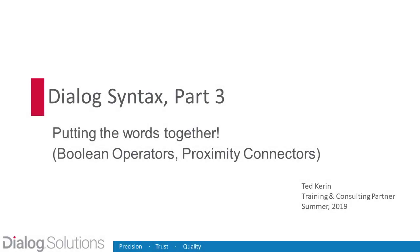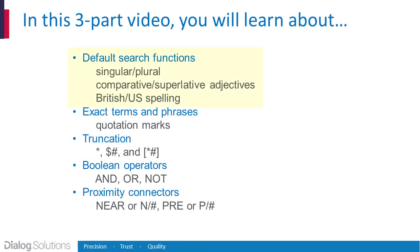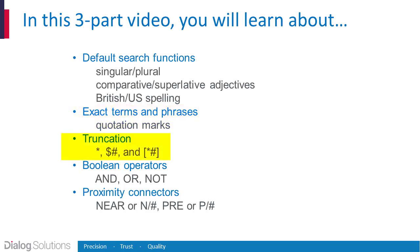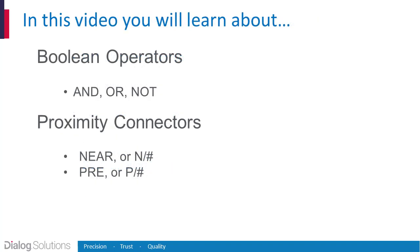Hello everyone, and welcome to Part 3 of this three-part video on Search Syntax in Dialog. In the first two parts, we looked at some of Dialog's built-in default search tools, how they work on their own, and how you can turn them off for exact searching. We've also looked in some detail at an important tool called truncation. In this last part, we'll talk about how to combine search terms in Dialog, either with Boolean operators, or by using proximity connectors called NEAR and PRE, to take control of how close together you want your terms to be.